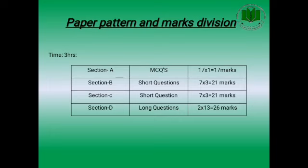Similarly, there is Section B, which is of short questions. You will be given 10 short questions with a choice of three, meaning you will have to solve 7 out of 10 short questions. Each carries three marks, so total marks allocated for this section will be 21.